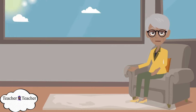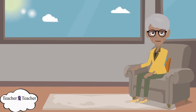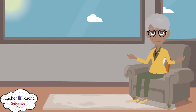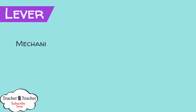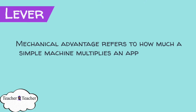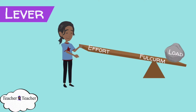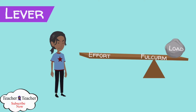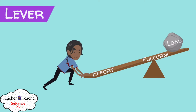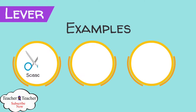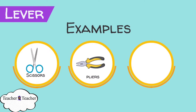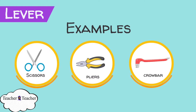I have used a new word here: mechanical advantage. What is mechanical advantage? Mechanical advantage refers to how much a simple machine multiplies an applied force. The farther the effort is away from the fulcrum, the easier it is to move the load. The examples of first class levers are scissors, pliers, and a crowbar.